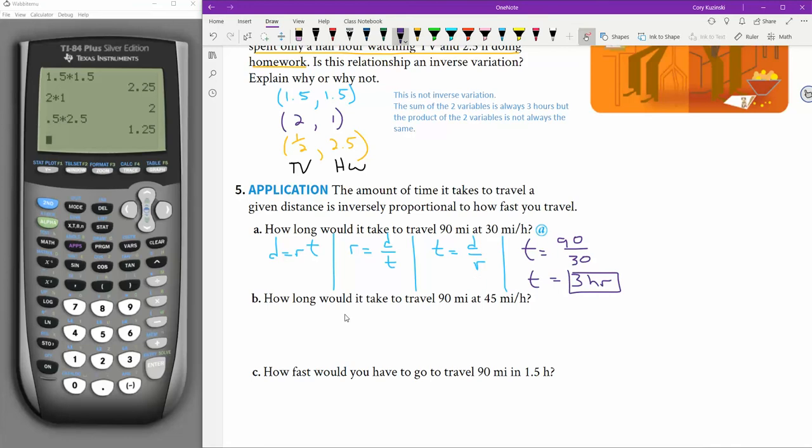How long would it take to travel 90 miles at 45 miles per hour? Okay. So they're asking me time. 90 miles over 45 miles per hour. That would be two hours.